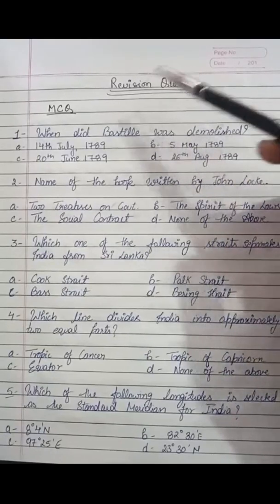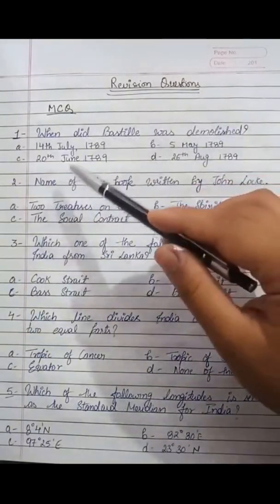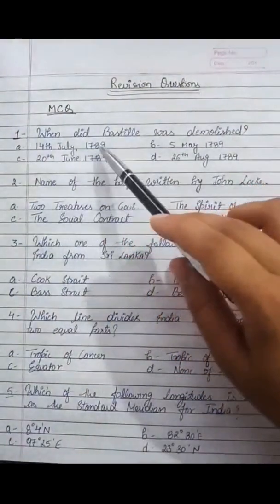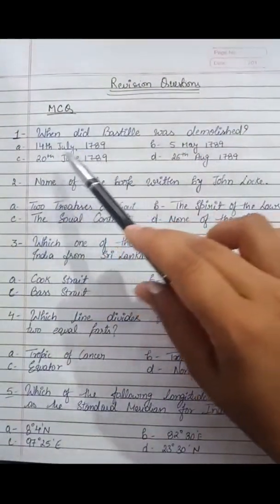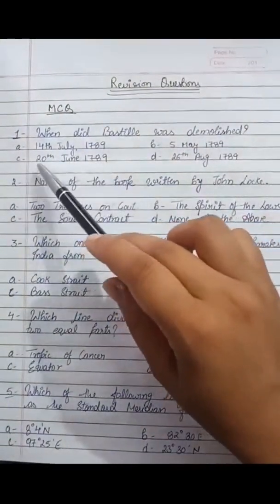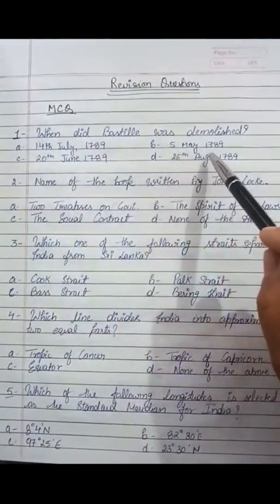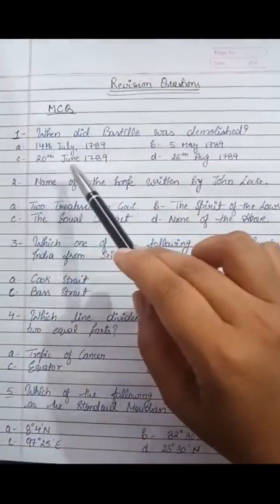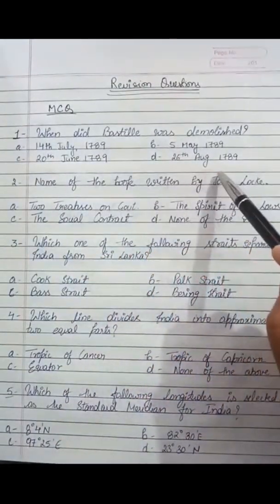So dear students, these are the revision questions for you. Please practice at home. These are the MCQs. First one is: when did Bastille was demolished? Options are: a. 14th July 1789, b. 5th May 1789, c. 20th June 1789, d. 26th August 1789.